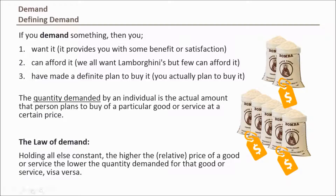This law states that if we ignore all other influences on demand — like tastes, perceptions, or natural disasters — then the higher the relative price of a good (the more expensive it is compared to other goods), the lower the quantity demanded. This is simply a description of something quite obvious: we tend to buy more of something if it's affordable and less if it's expensive compared to other things we could buy.